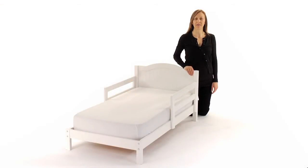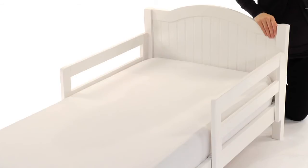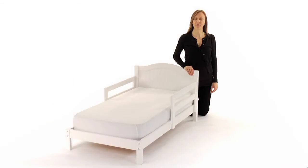This is Pottery Barn Kids' Catalina Toddler Bed. Sturdy and snug, this toddler bed features detachable guardrails and is low to the ground, making it the perfect bed for a child who is ready to leave the crib, but not yet ready for a big kid bed.